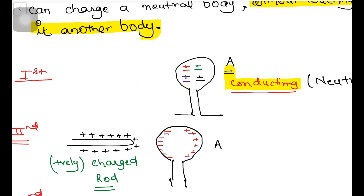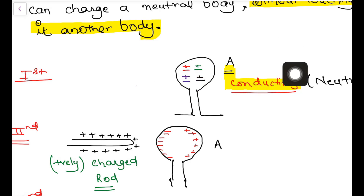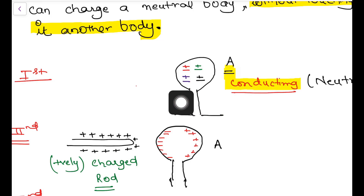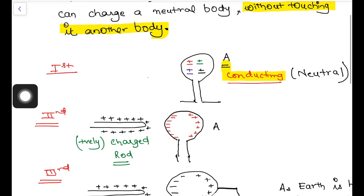In a neutral body, we see an equal number of positive and negative charges. Suppose there are 4 positive charges and 4 negative charges. And I want to make this neutral body negatively charged — so what do I have to do?